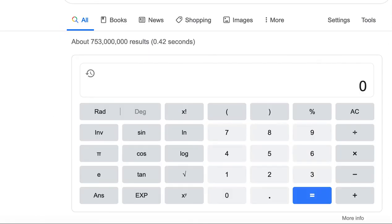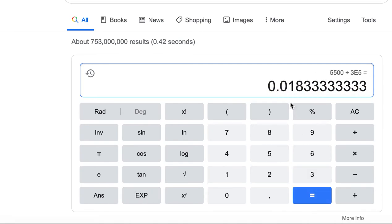Now let's go to our calculator. You can look on your favorite internet browser to look for a calculator, and I just typed calculator in the search window. So we're going to divide 5,500 by 3e5, and we get a value of 0.0183.